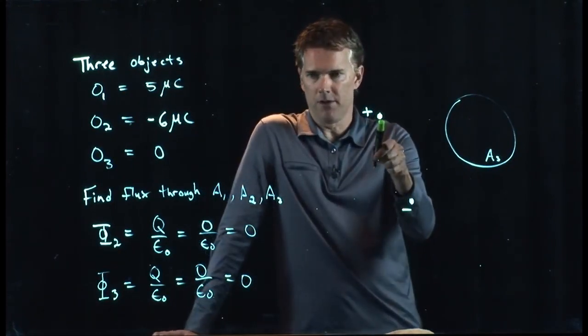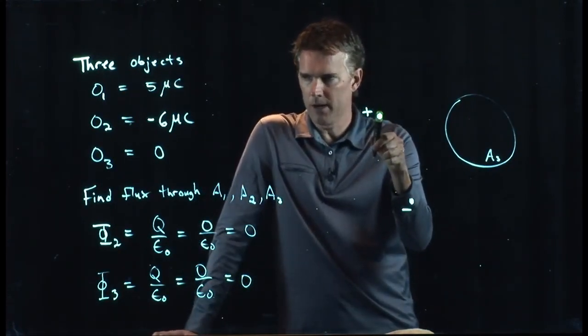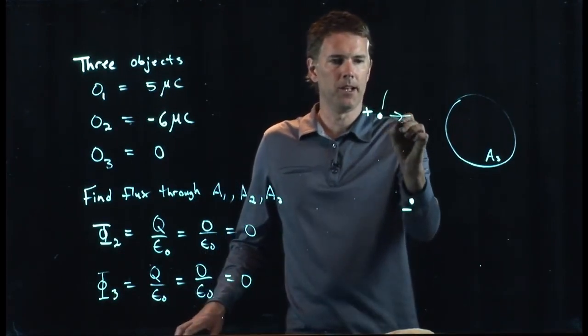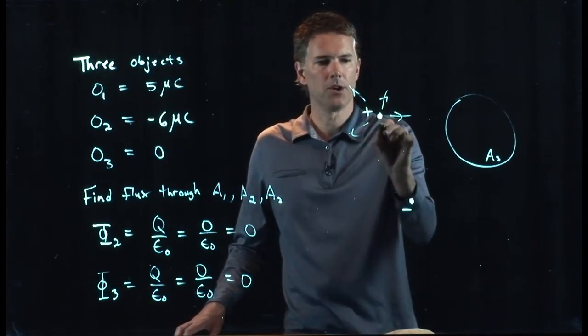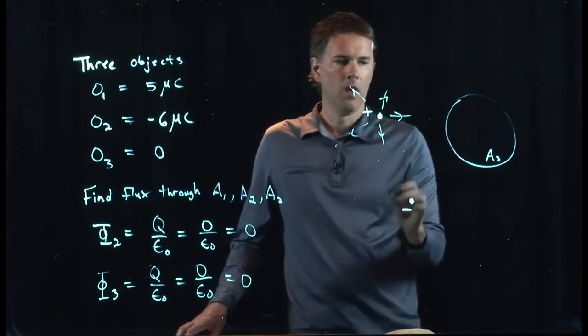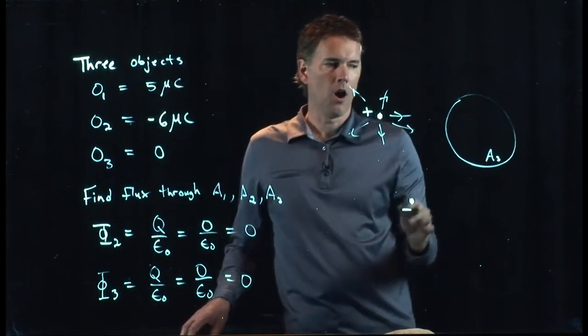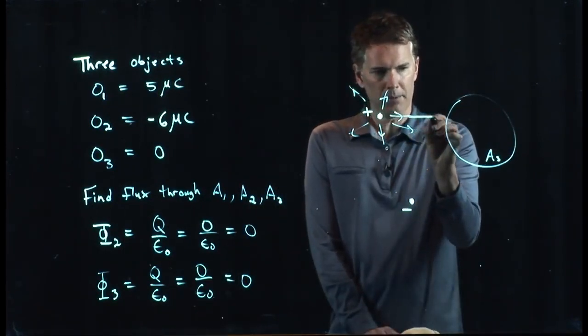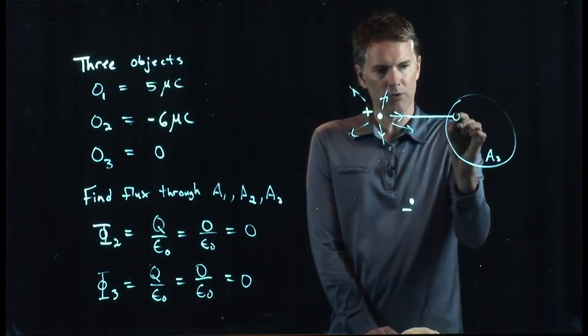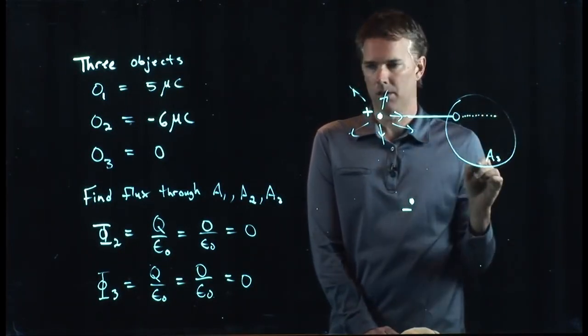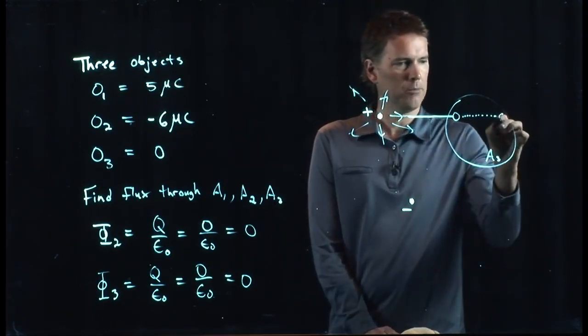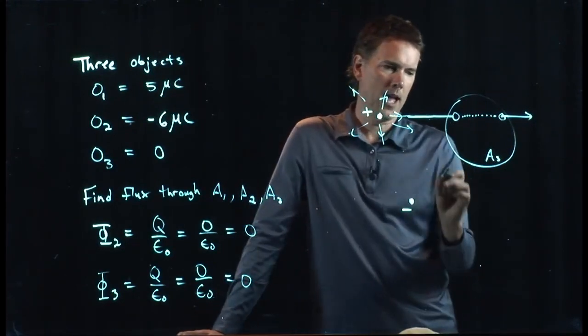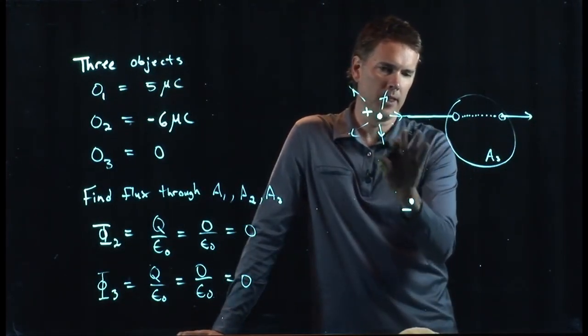I have a positive charge sitting right here. Are there electric field lines coming out of that positive charge? Absolutely, right? We know what it's doing. They're pointing radially out from the charge, like so. A few of those are pointing right at A3. And so this field line doesn't just stop. It's going to keep going, and then it goes into A3, but then it comes back out of A3.